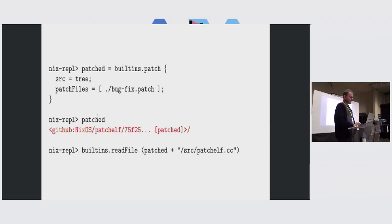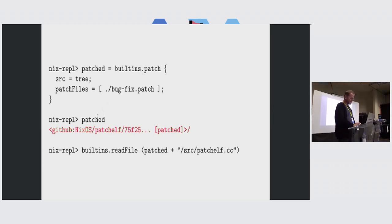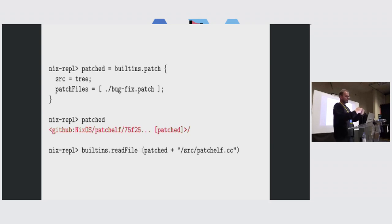I'm using the word 'patched' too often here — maybe I shouldn't have used patchelf as an example, it gets a bit ambiguous. When I do builtins.readFile to read a file from that source tree, it will actually look whether it has a patch that applies to that particular source file and apply it in memory.